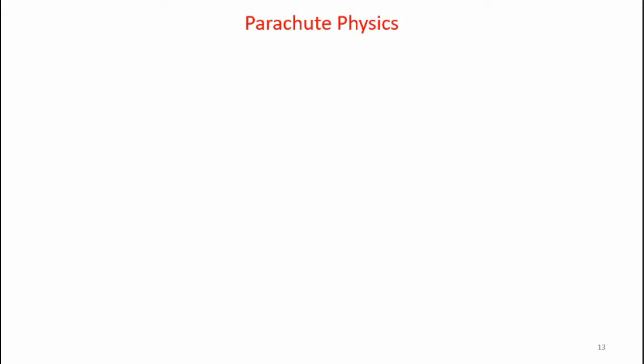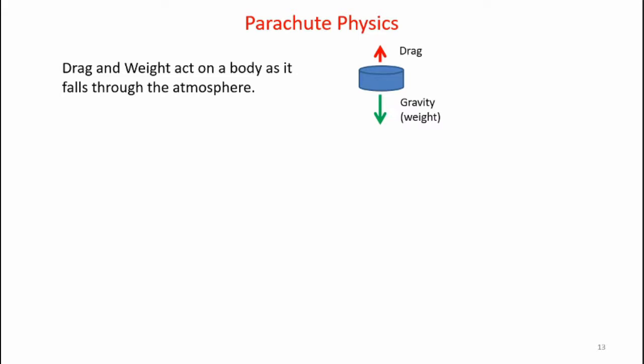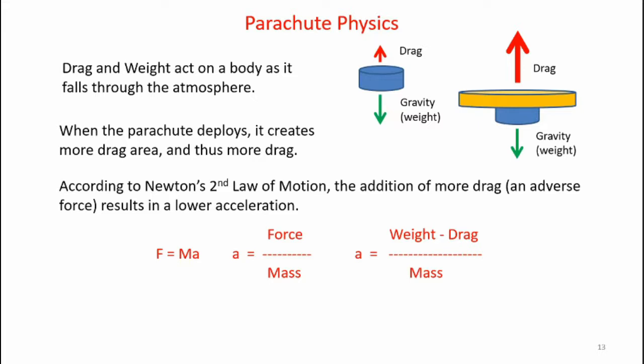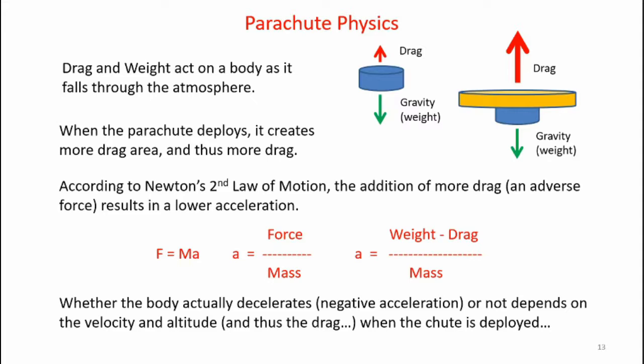Now let's take a look at how Newton's second law of motion comes into play with parachutes. Drag and weight act on a body as it falls through the atmosphere. When the parachute is deployed, it creates more drag area and thus more drag. According to Newton's second law, the addition of more drag — which is an adverse force — results in a lower acceleration, as you see in the equation F equals ma. Whether the body actually decelerates depends on the velocity and altitude, and thus the drag, when the chute is deployed.